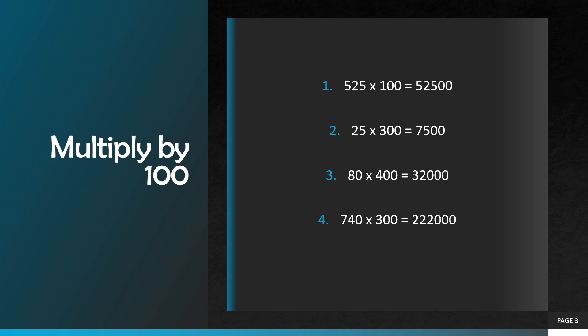Question number three: eighty multiplied by four hundred. We are going to add three zeros this time. Eight multiplied by four is equal to thirty two, so our correct answer will be thirty two thousand.